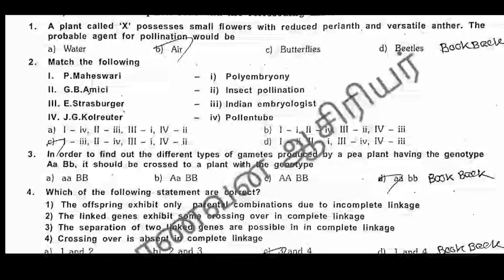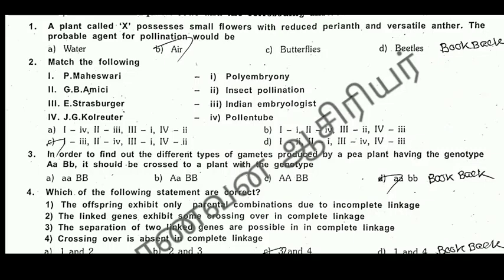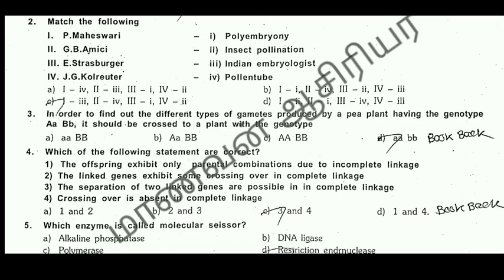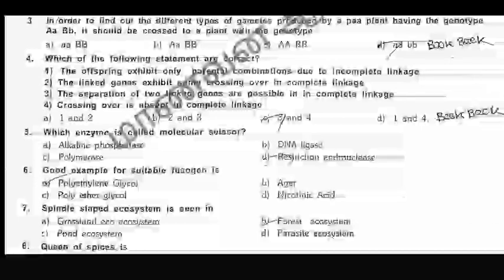P. Maheshwari, who is an Indian embryologist. Next, G.P. Asimi — pollen tube. That's why you find polyembryony. That's why you find K.G. That's why you find insect pollination. So this is the second question, and the next one is the third question. Fourth one is the interior.